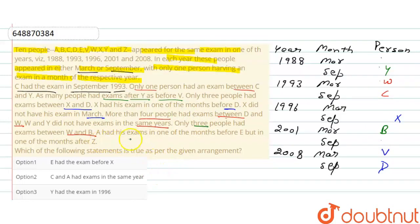A had his exam in one of the month before E but in a month after Z. यहां है A का exam, this means Z कहां है, यहां है Z, यहां है A का exam and E. And E यहां है A का exam, this means यहां है E. We have arranged here.